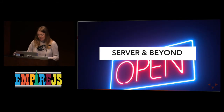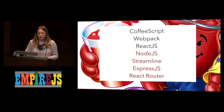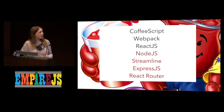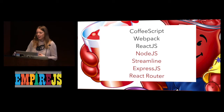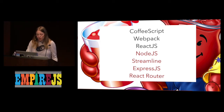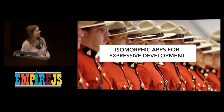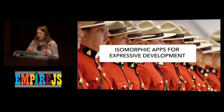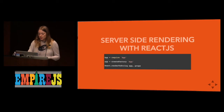Let's get to server and beyond. We've focused on the client so far — framework and tools — but what does it actually mean to build out our whole web app? Our stack is CoffeeScript, Webpack, React, Node, Streamline, Express, and React Router. What does it mean to do isomorphic apps for expressive development? In our web app there's a lot of working closely with the backend team, but it's nice not to switch uniforms. Working on an isomorphic app with server-side rendering gives us more freedom to own the whole web app and do what we want. Server-side rendering with React is super straightforward — you literally just render to string your app and pass in any props it needs.